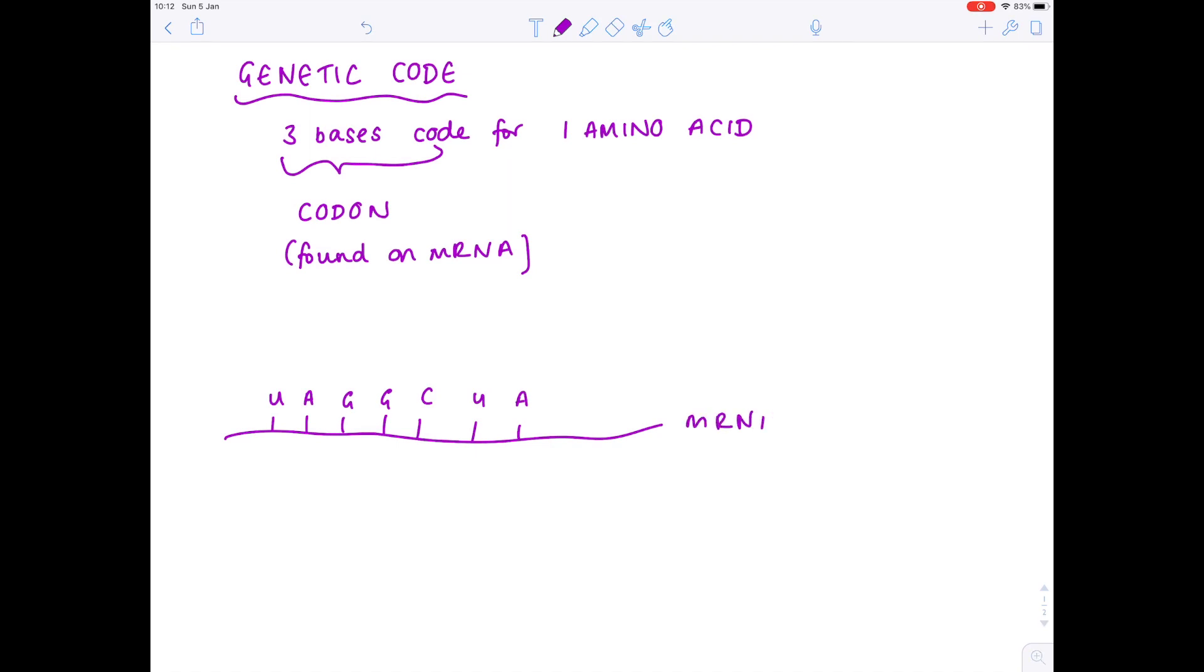But remember, this single-stranded molecule of mRNA binds to a ribosome. And really, what I'm saying here is that three of these bases are what's known as a codon. Now, it's really important that each codon is made up of three bases.